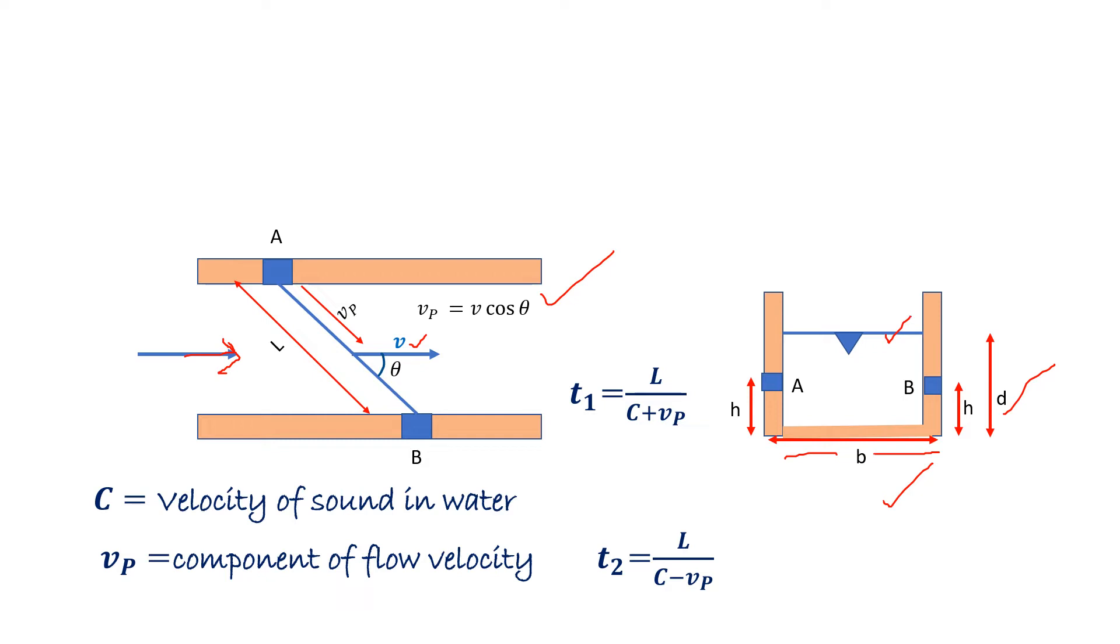And two transducers A and B are installed at height S from the bed level. These two transducers can send as well as receive the ultrasonic signal.